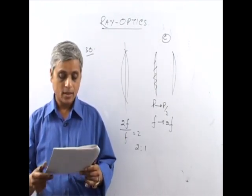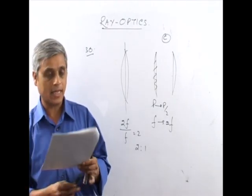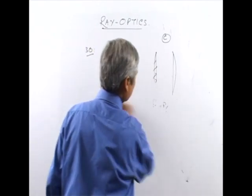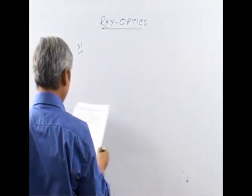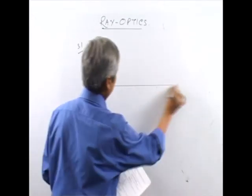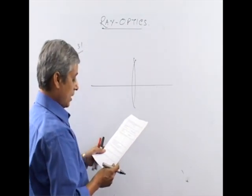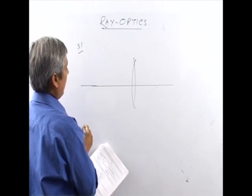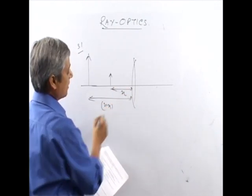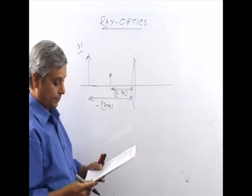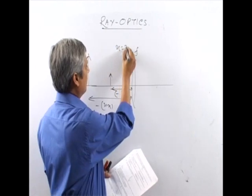Question number 31: A convex lens of focal length F produces a virtual image N times the size of the object. Find the distance of the object from the lens. If the object distance is x, then image distance is Nx. For a virtual image with a convex lens, both are on the same side, so both are negative in sign convention. We need to find x.